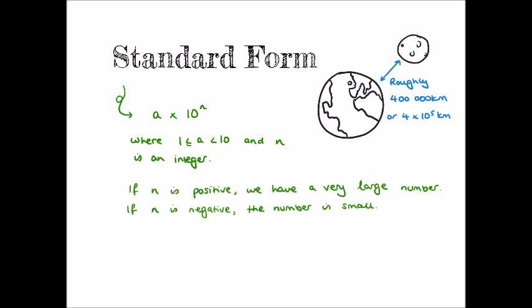It's worth noting that if n is positive, then we're working with a very large number — for example, the distance between the Earth and the Moon. Whereas if n is negative, we're dealing with a small number, a number less than 1 — for example, if we were trying to measure the width of an amoeba.